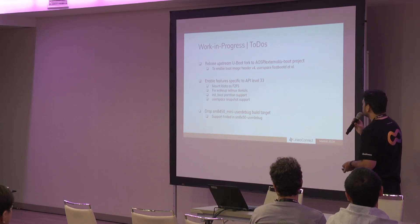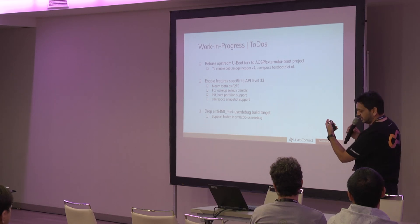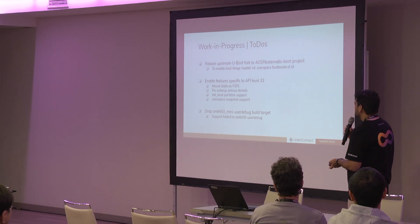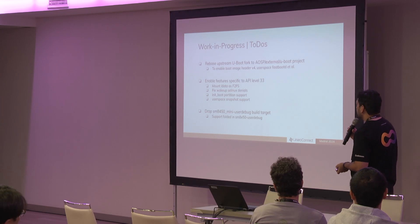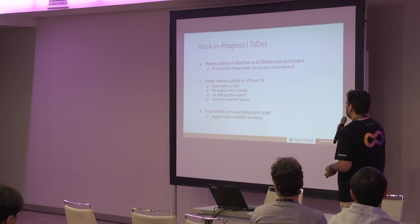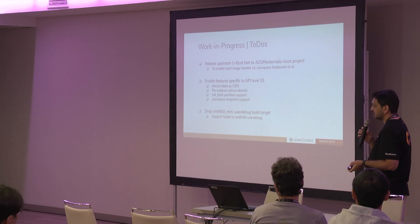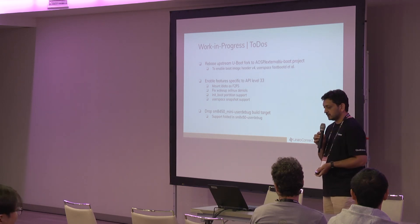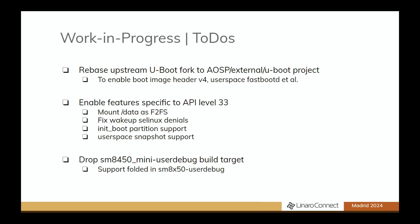Here is a list of work in progress items. We use an upstream fork of U-Boot for RB3 and RB5, but we will switch to the AOSP U-Boot project because it has all the Android features we currently lack in upstream U-Boot. We also need to enable certain features specific to API level 33. Finally, we plan to drop the 8450 target since no one is apparently using it, and our SM8x50 support should cover 8450 as well. Now I will hand over to Yung-Chin for the LKFT updates.